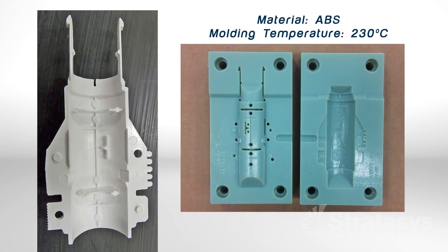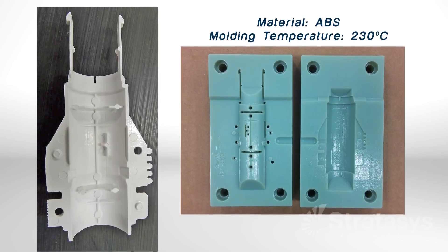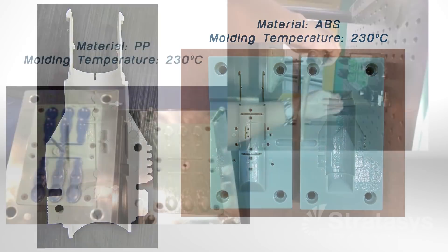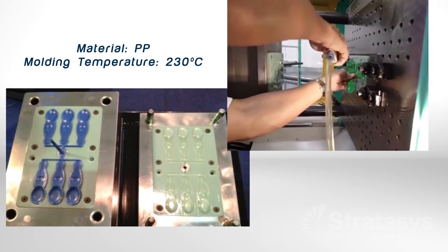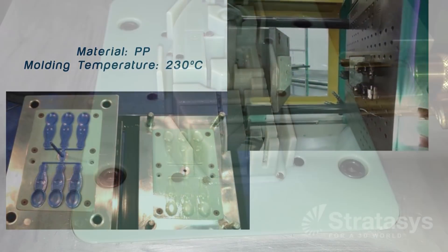PolyJet addresses form and fit prototypes, and now functional prototypes in end-use materials. For form and fit, 3D print a part. For functional review, 3D print the injection mold.